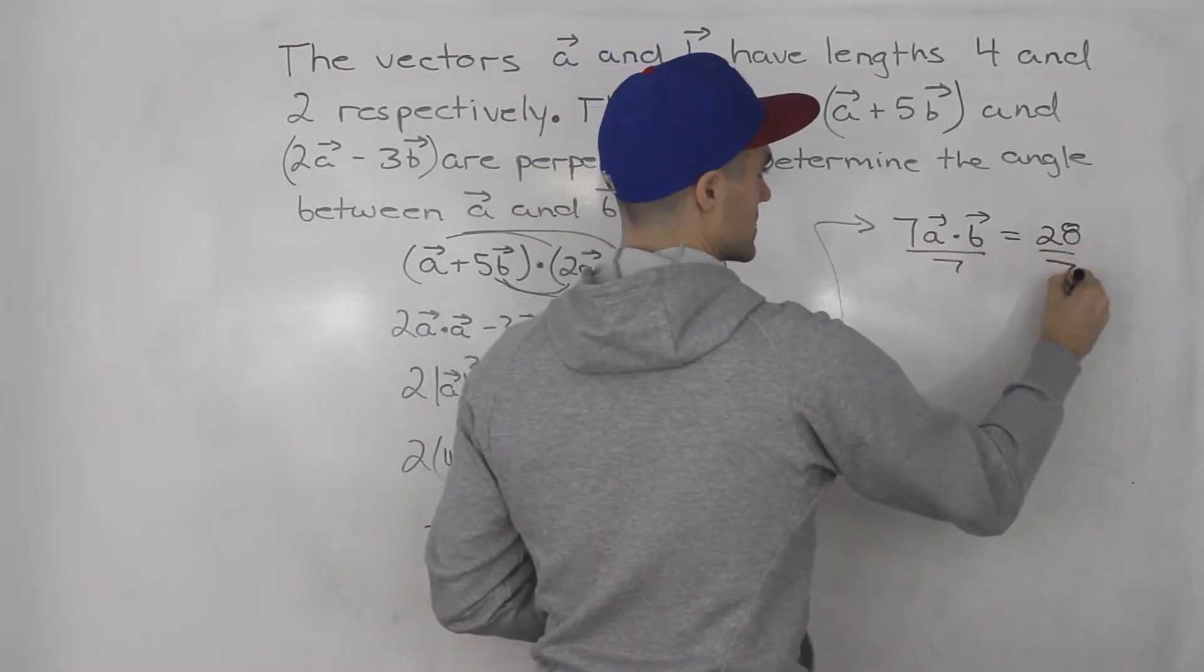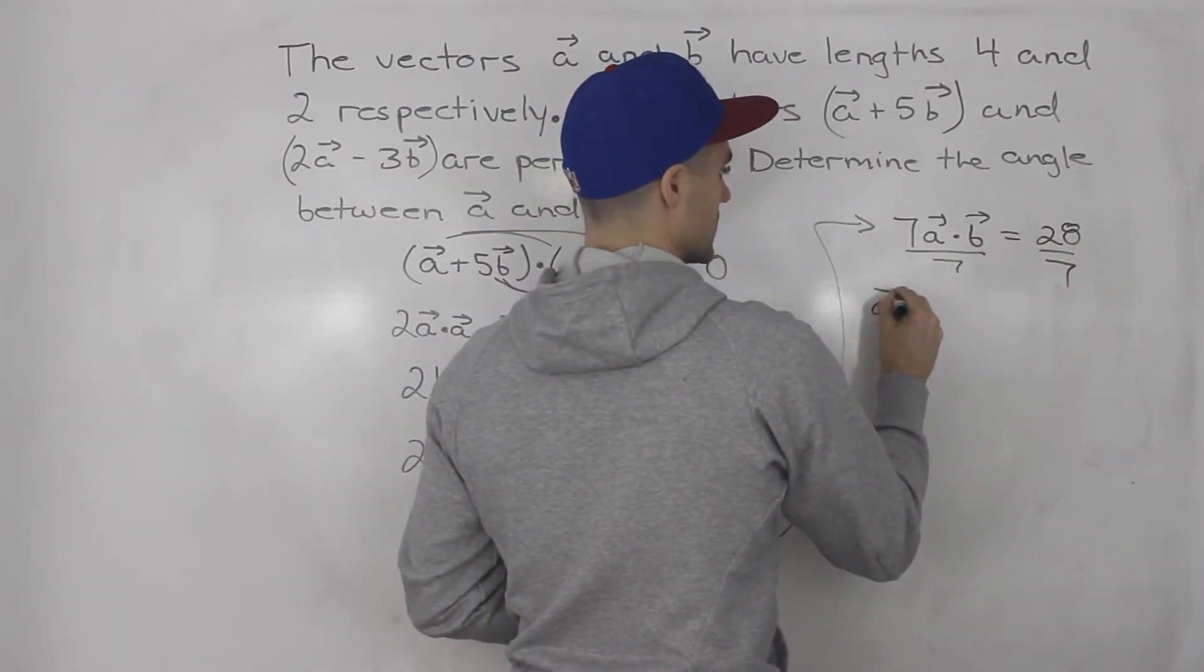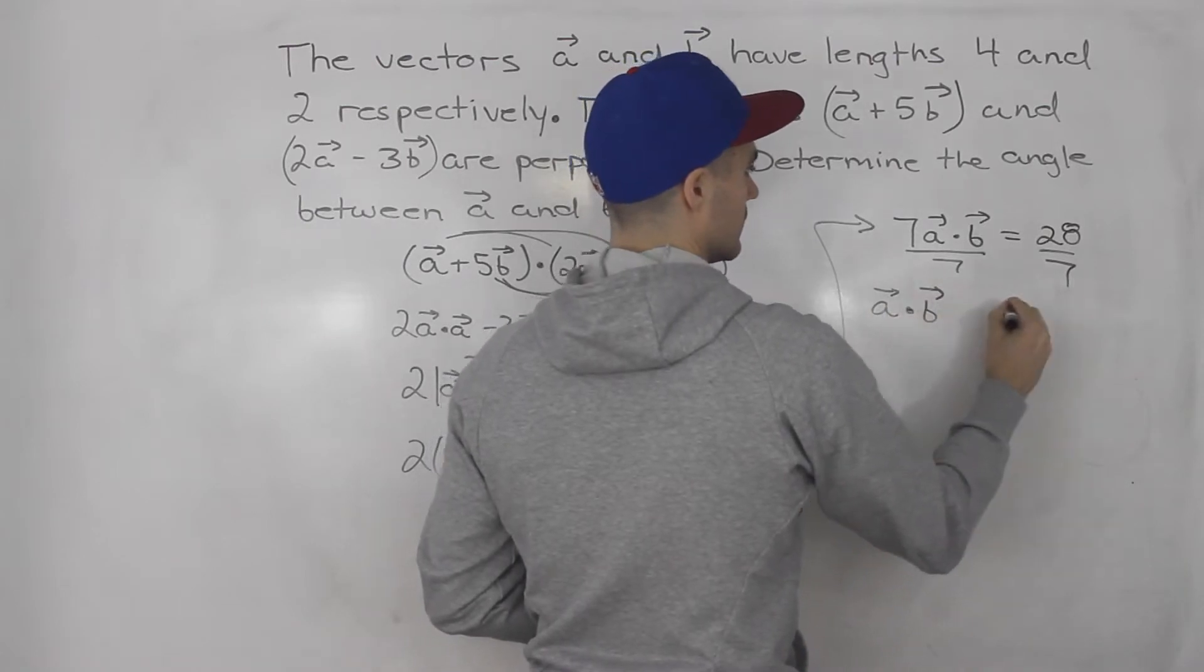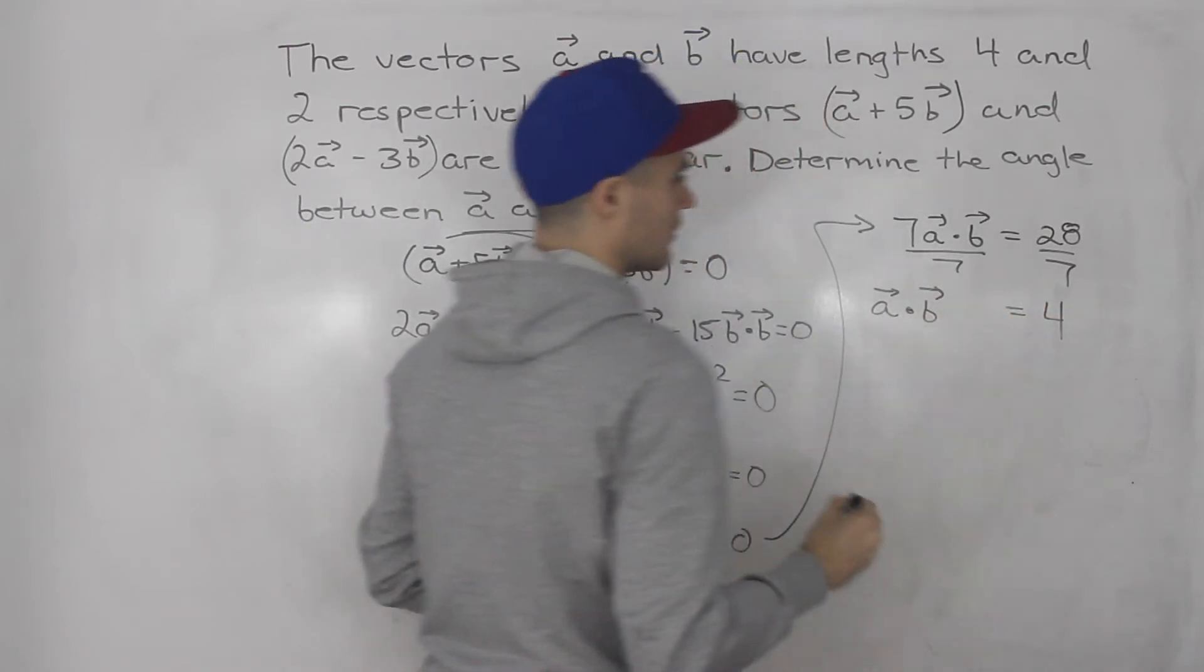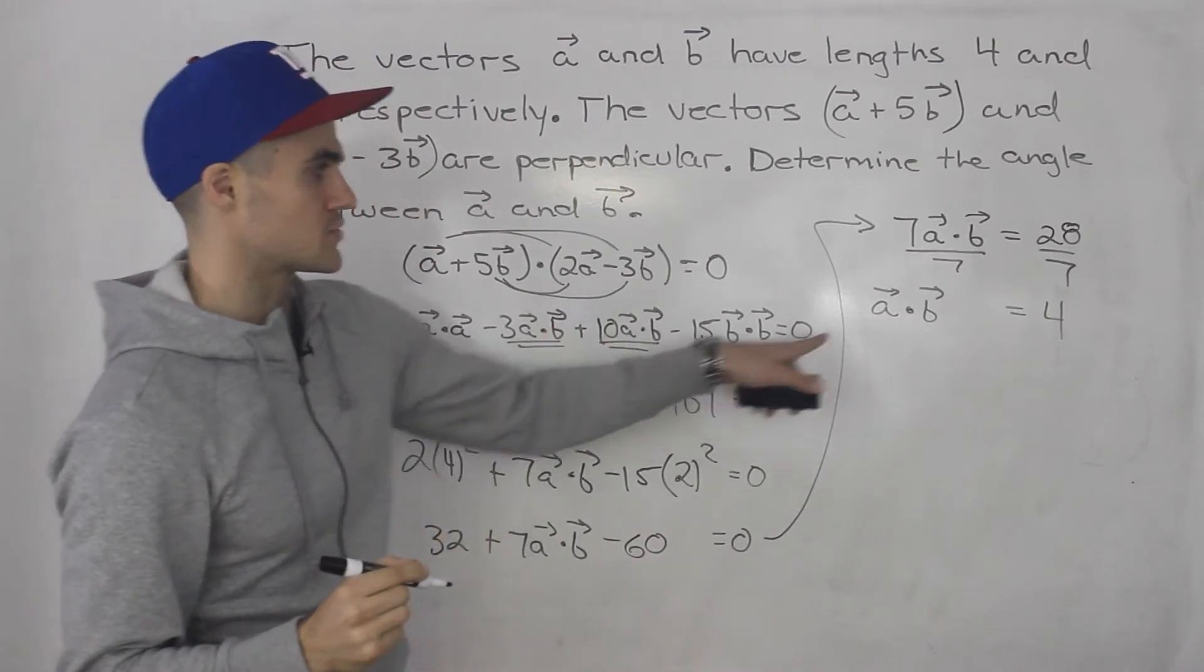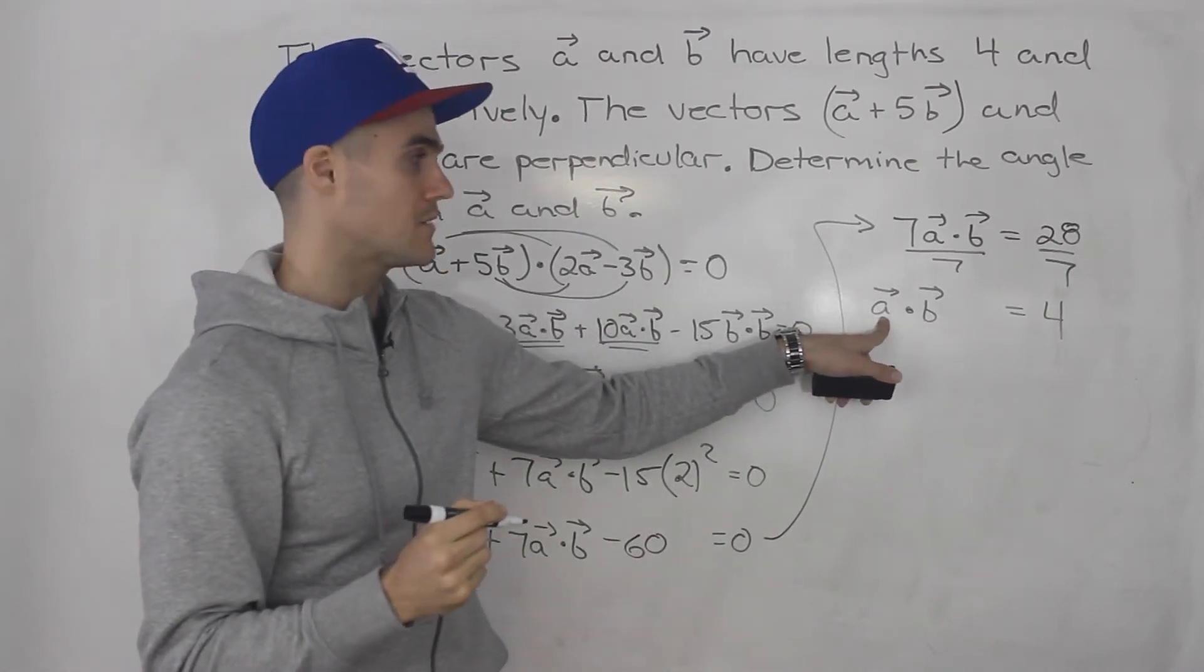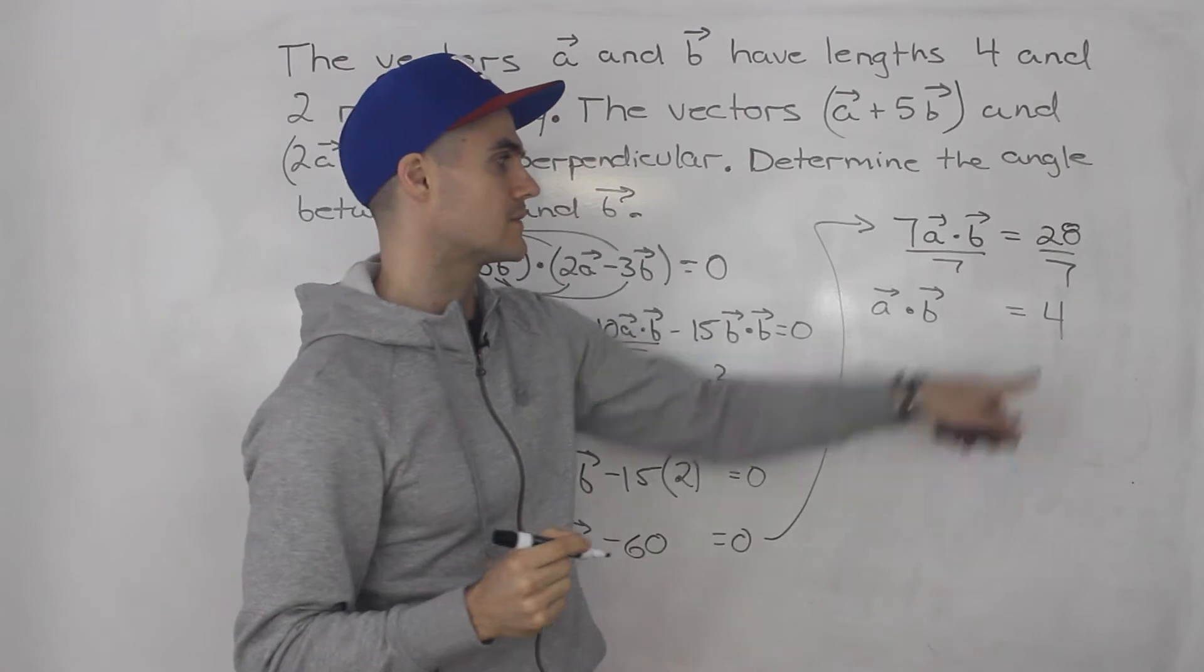Then divide both sides by 7. So we got a·b = 4. Now a lot of times these types of questions will just ask for what the dot product between a and b is. It's equal to 4 in this case.